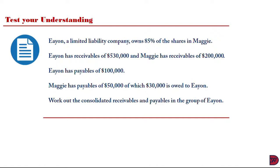Let's test our understanding again. Ian, a limited liability company owns 85% of the shares in Maggie. Ian has receivables of $530,000 and Maggie has receivables of $200,000. Ian has payables of $100,000. Maggie has payables of $50,000 of which $30,000 is owed to Ian. Work out the consolidated receivables and payables in the group of Ian.